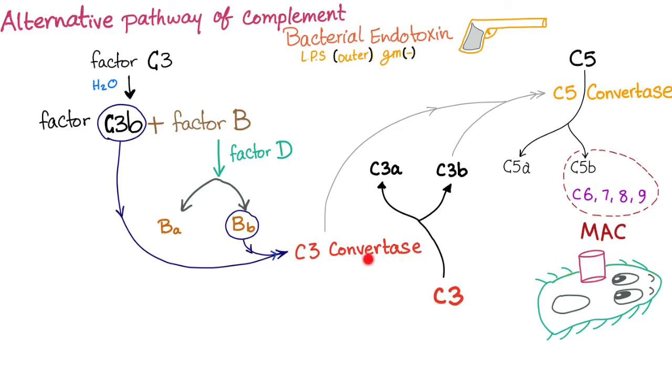This is a big deal. C3 Convertase will convert C3 into C3A and C3B. C3B will bind with C3 Convertase to form C5 Convertase.